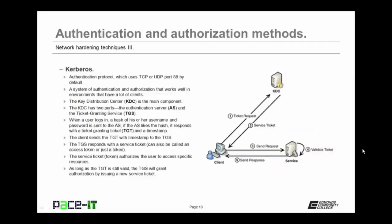One of the more popular EAP methods is Kerberos. It's an authentication protocol which uses TCP or UDP port 88 by default. It's a system of authentication and authorization that works well in environments with a lot of clients. The main component of Kerberos is the Key Distribution Center, or KDC. The KDC has two parts: the authentication server, or AS, and the ticket granting service, or TGS. When a user logs in, a hashed value of their username and password is sent to the authentication server. If the AS likes the hash, it responds with a ticket granting ticket, or TGT, and a timestamp.